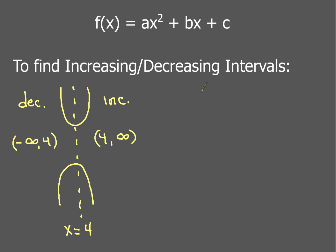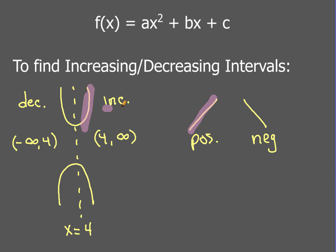If you think about it, increasing and decreasing intervals really just have to do with slope. Increasing has to do with a positive slope, and decreasing has to do with a negative slope. If I look at the slope on the right side of an upward-opening parabola, that slope is kind of positive — so that's why that side is increasing. Likewise, if my parabola were opening down, the piece between negative infinity and 4 would have a positive slope going up, so that's the increasing side, and the right-hand side going down from the vertex would be the decreasing side.